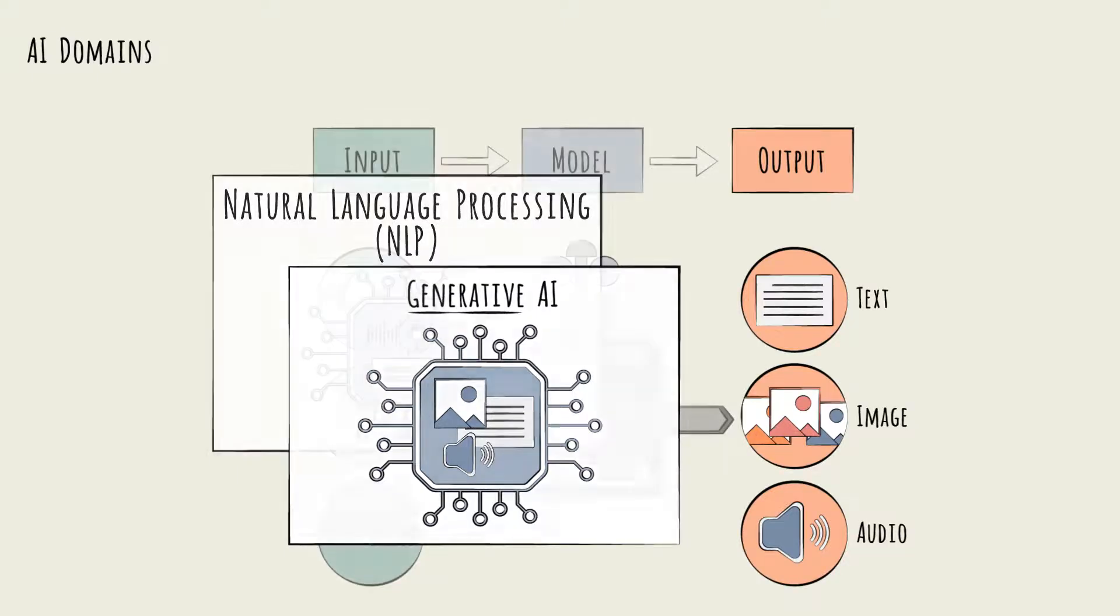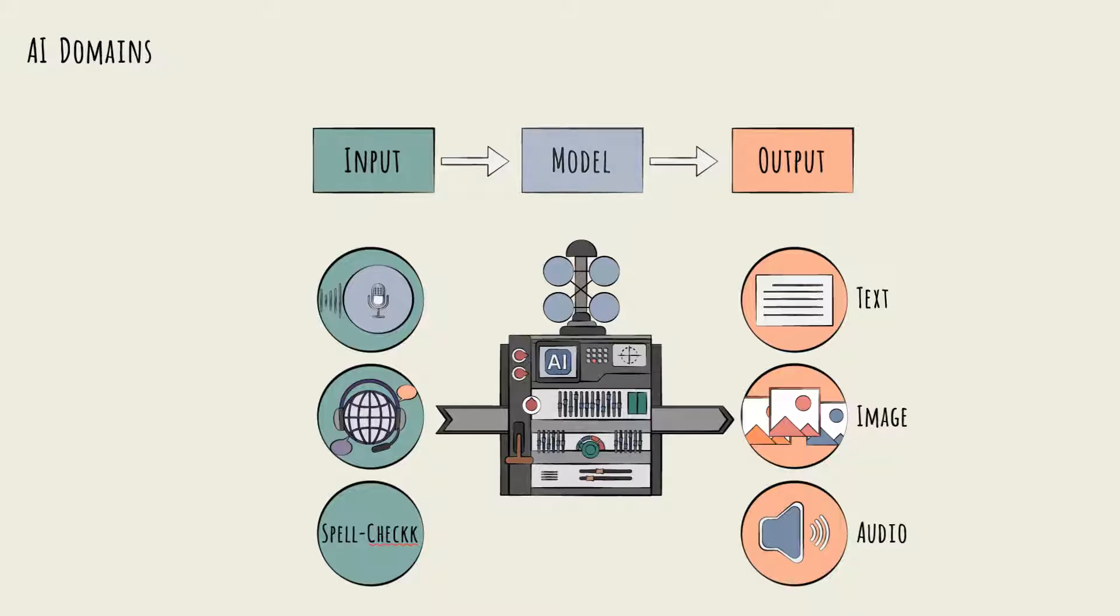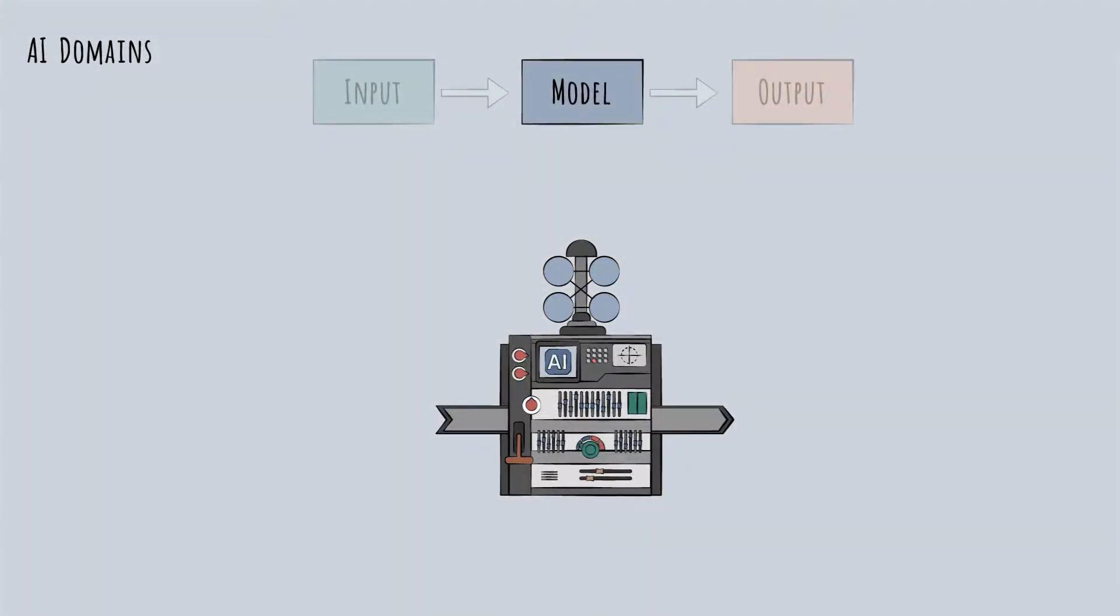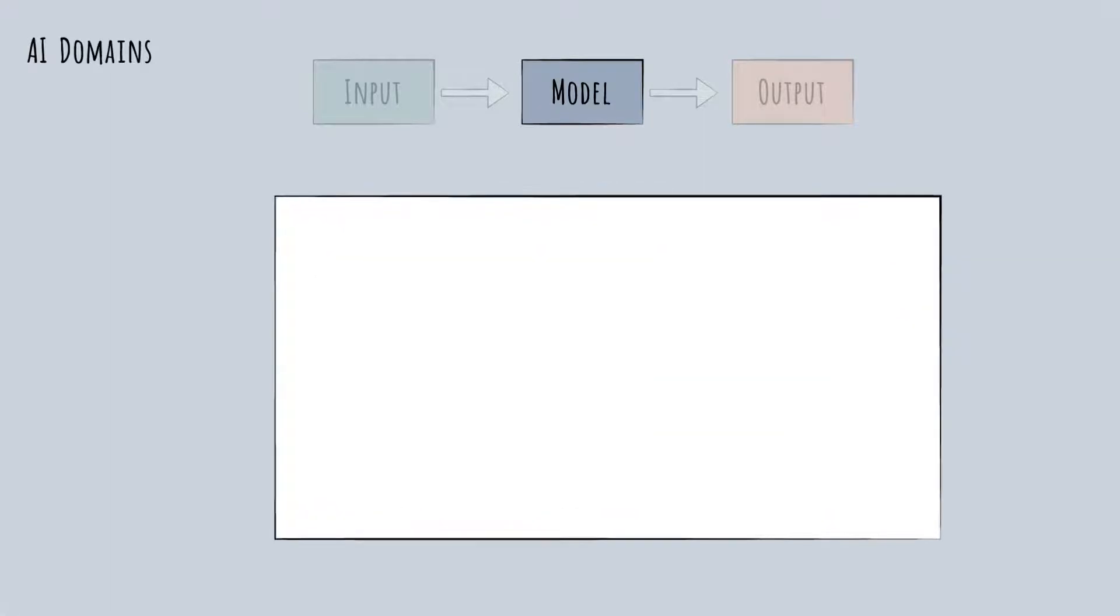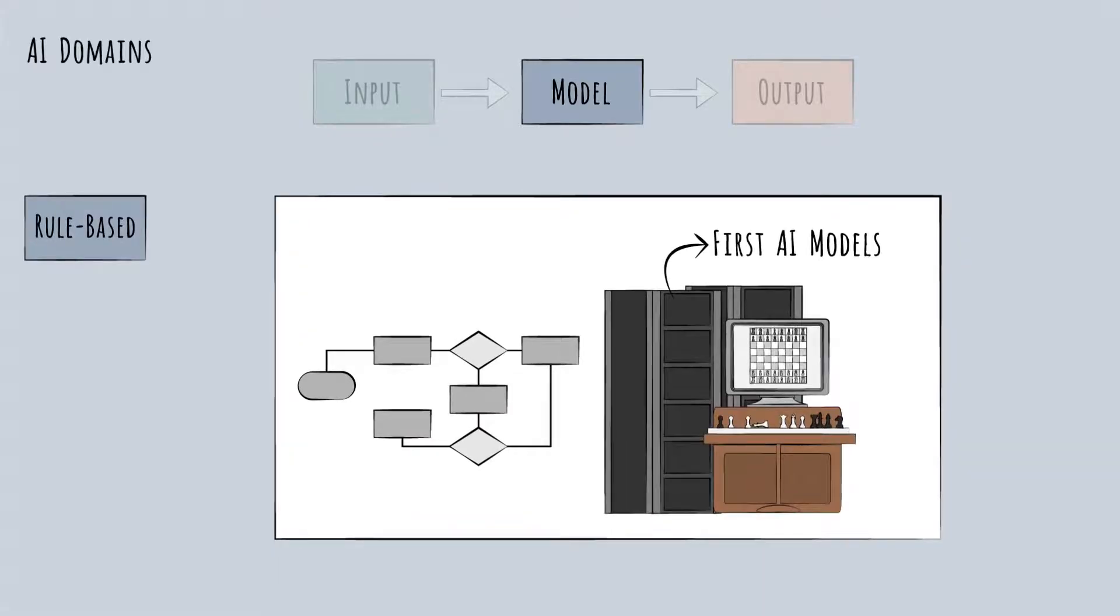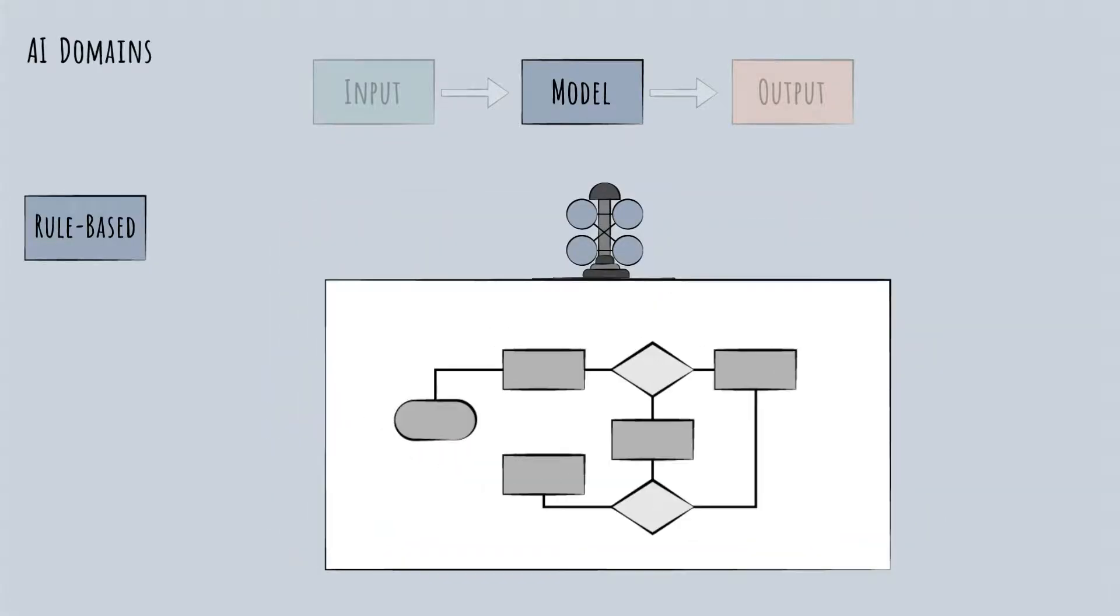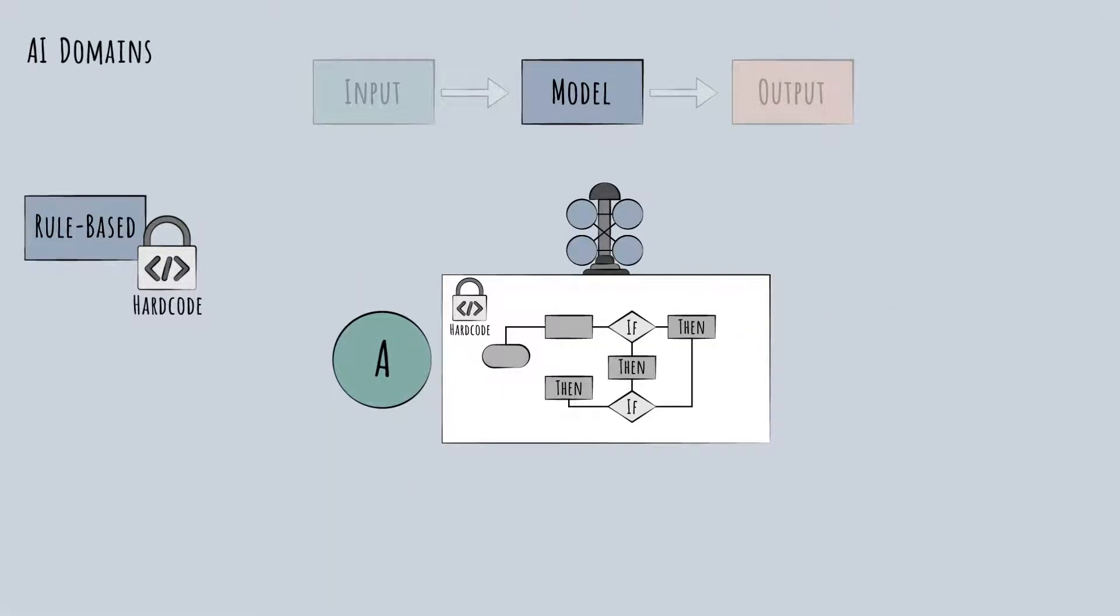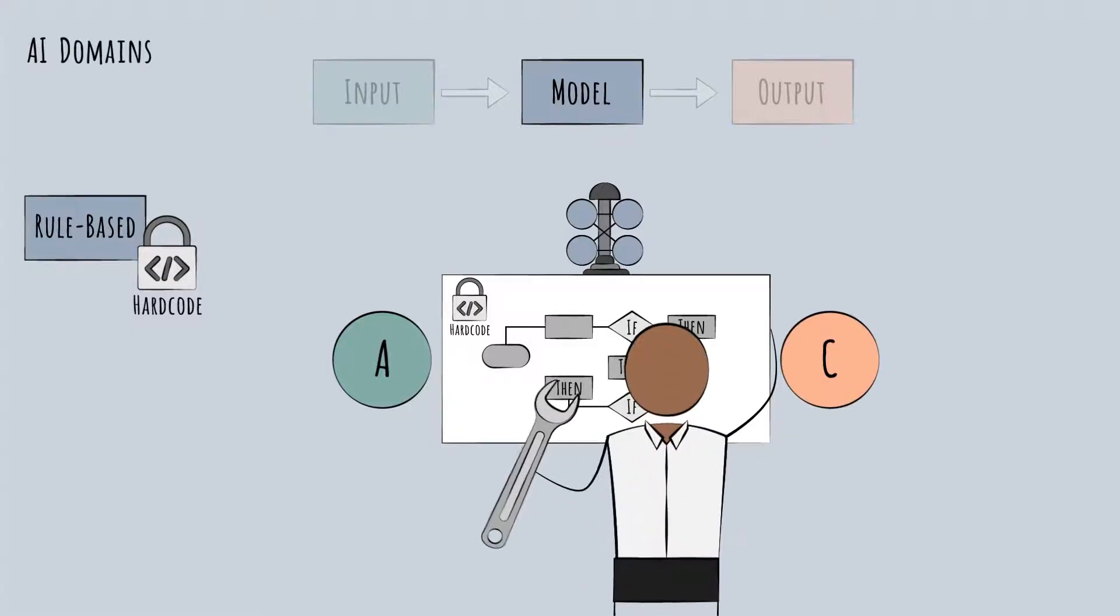A third, and the most common way to segment the landscape of AI domains is by the type of model used. This is where you'll hear terms like machine learning and deep learning. Using the model type lens, the first domain is that of the rule-based AI models, which were the first AI models used and are still used in many applications today. The build step of these types of models involves hard-coding rules with if-then logic. If the input is A, then output C. Humans set the rules, and the AI model applies them.